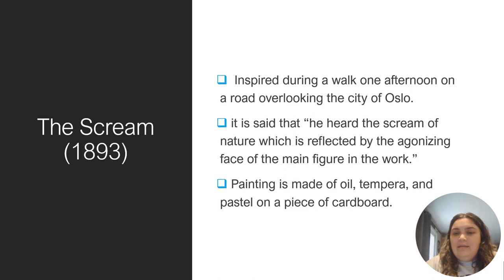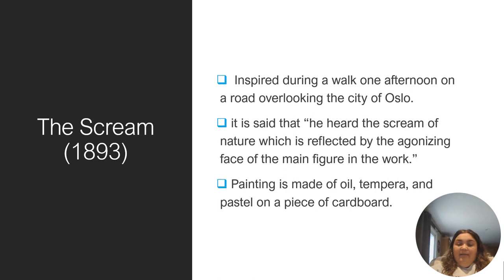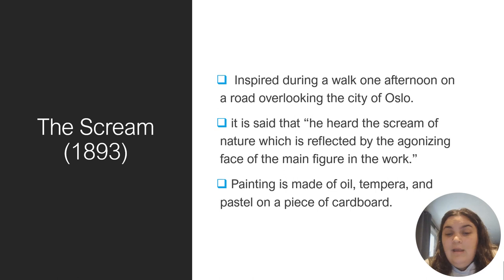It depicts a road overlooking the city of Oslo. I read that Edvard was on a walk after dinner with some friends, who had walked ahead of him. It is said that he heard the scream of nature, which is reflected by the agonizing face of the main figure in the work — we see the man with his hands on his face, screaming. Edvard depicted him like this because he said he heard the scream of nature. This painting is made of oil, tempera, and pastels on a piece of cardboard.